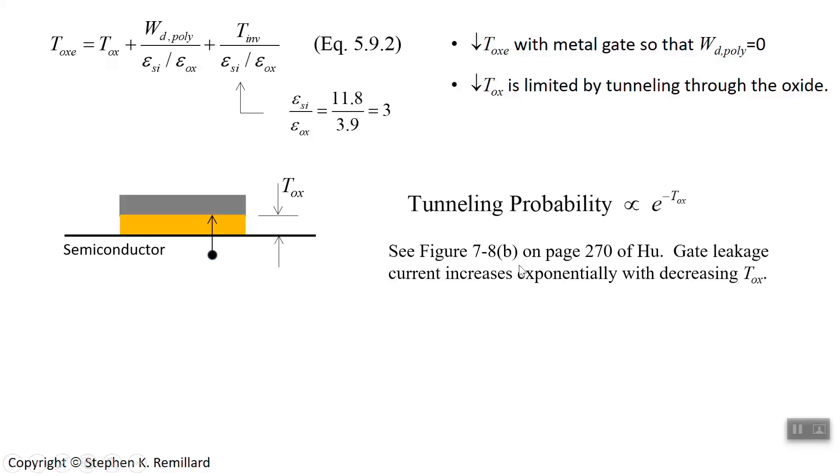I recommend that you take a look at Figure 7-8b in Chapter 7 of the textbook, which shows for silicon the gate leakage current as the oxide layer gets thinner and thinner.